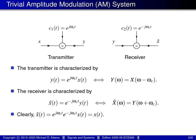Before introducing any practical amplitude modulation scheme, I first want to present a very trivial amplitude modulation system. This system consists of a transmitter shown on the left and a receiver shown on the right, connected in series. The goal is for the output of the receiver, denoted as x-hat, to be equal to the input of the transmitter, denoted as x.